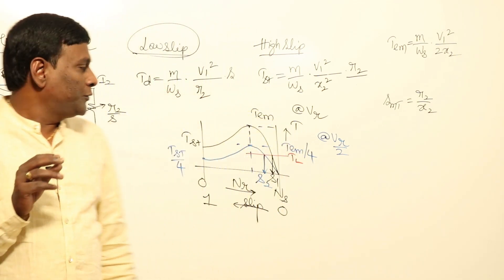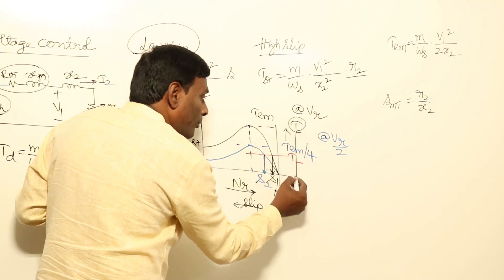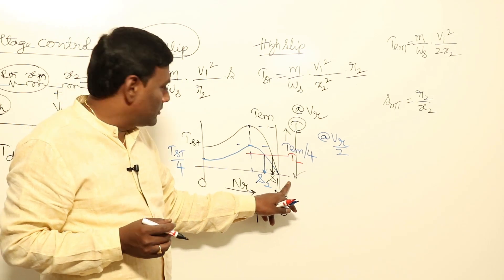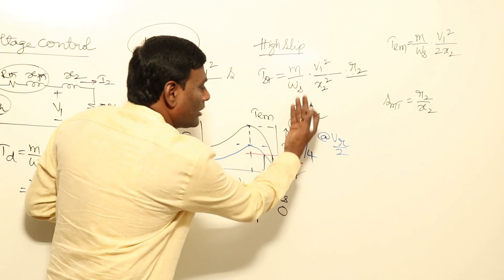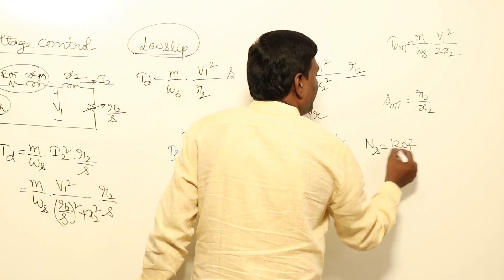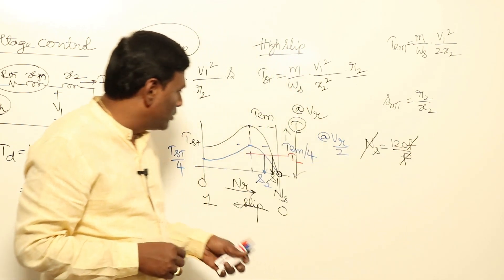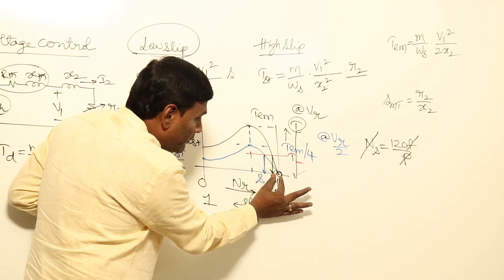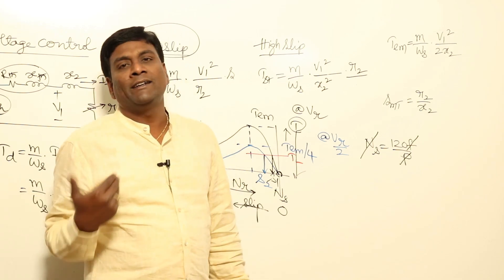Let us think about speed regulation. For the black curve, at no load, torque requirement is zero, so the machine rotates almost at synchronous speed. Blue also operates from synchronous speed at no load. From no load to full load, the speed variation for black is less, but for blue it is more. So from black to blue, speed regulation increases — the speed variation from no load to rated load is greater.